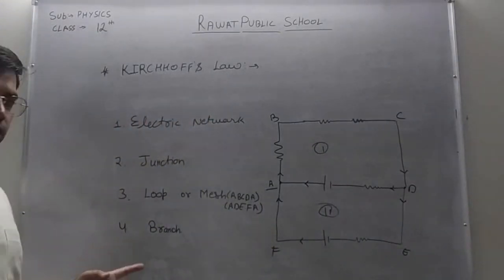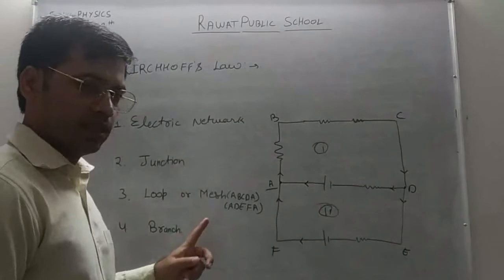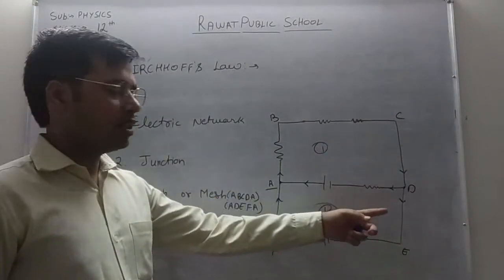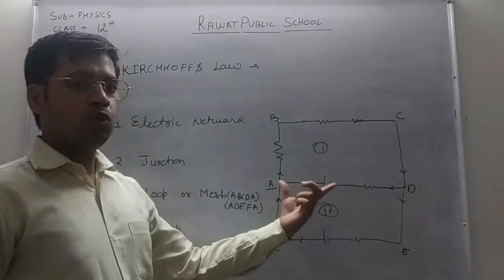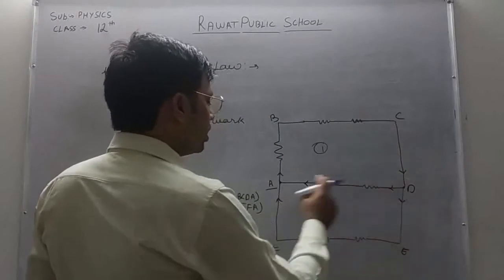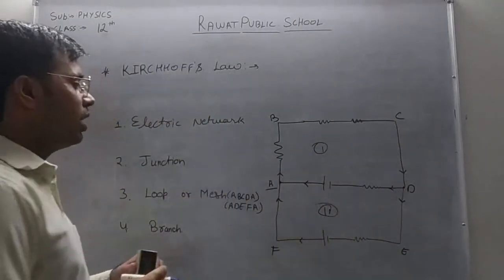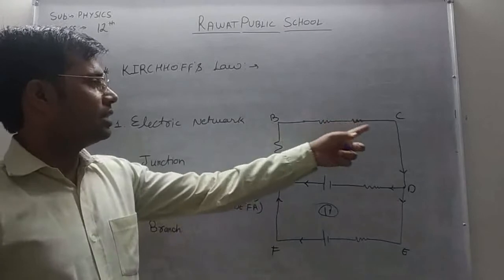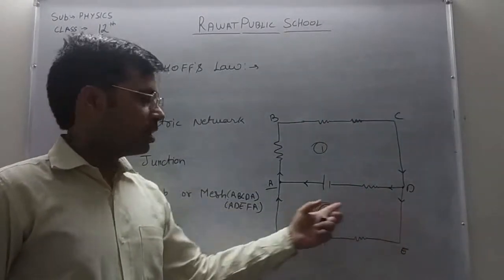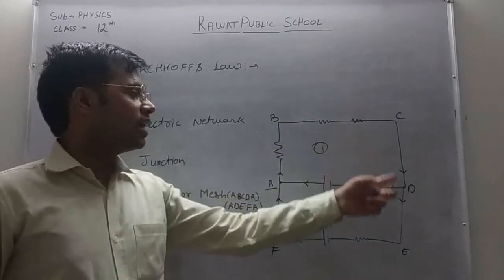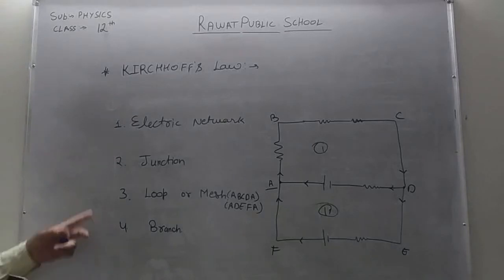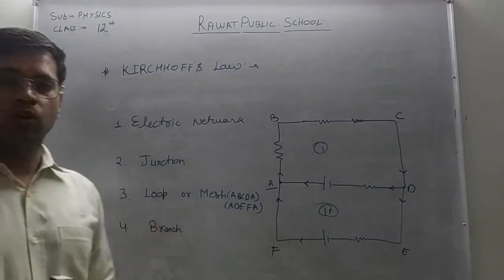Now third term is a branch. Branch is any part of the circuit, any line of the circuit between two junctions. In two junctions ki biech me jho line hoongi, is coa hum kya bol dhenge branch. So here A, B, C, D, here haa per ye complete line kya hai branch. Thik hai? In two junctions ki biech me jho line hoongi that is known as a branch.